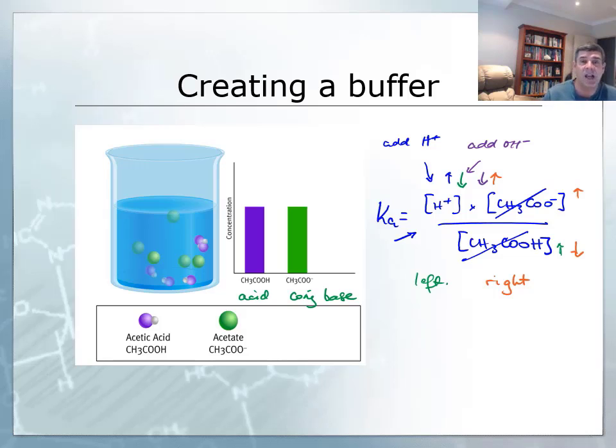So buffer solutions allow us to have some resistance to changes in pH over a small range. And they're a very useful thing in a number of important natural systems. And we'll look at those natural systems in the final video. Thank you for watching.